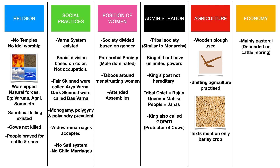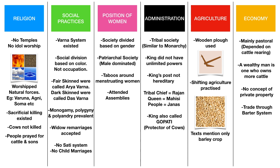Coming to the economy of the early Vedic civilization, the people mainly depended on cattle rearing. A wealthy man was not someone who owned large lands or money — a rich person was someone who owned more cattle. This stresses the fact that they gave utmost importance to cows. Also, there was no concept of private property; everything was communal. During this time, priests were given gifts not in money or land form but in cows and women slaves.